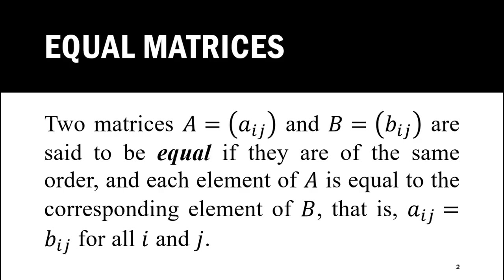Equal matrices. Two matrices A = [a_ij] and B = [b_ij] are said to be equal if they are of the same order and each element of A is equal to the corresponding element of B, that is a_ij = b_ij for all i and j. Here i represents the row number and j represents the column number in which the element a_ij lies.